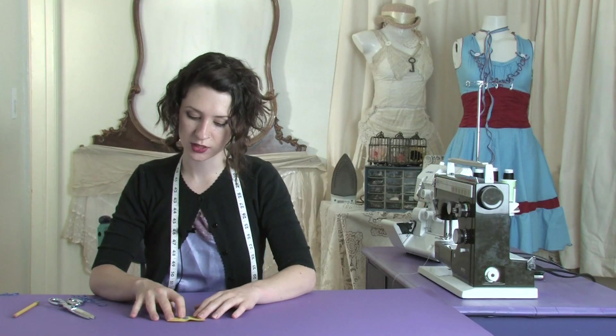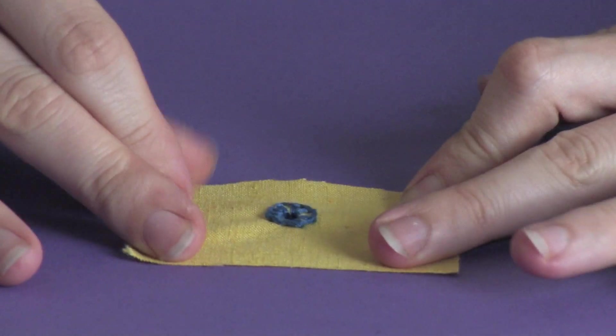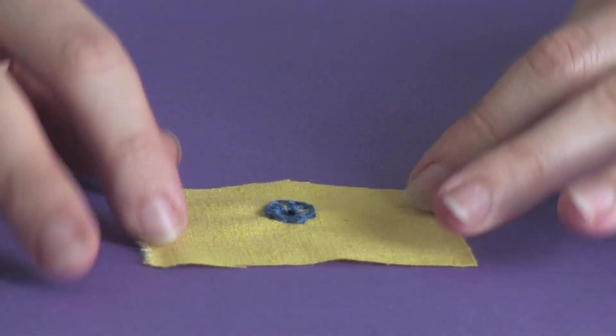And there you have it. You can do your stitches closer together. I was doing them sort of wide so that you could see how they should look. But that is how you hand sew an eyelet in fabric. This has been Mo of Mo West Creations. Ciao!